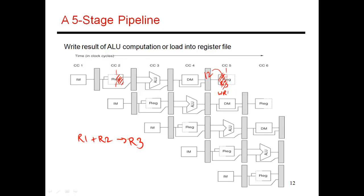Note that while instruction 1 might be performing a write in stage 5 in the first half, instruction 4, which is following behind, could be doing a read from the register file in the second half. This does not pose a conflict because the write is happening in the first half and the read is happening in the second half. This allows you to do both reads and writes from the register file in the same cycle corresponding to different instructions — in this case, I1 does the write and I4 does the read.